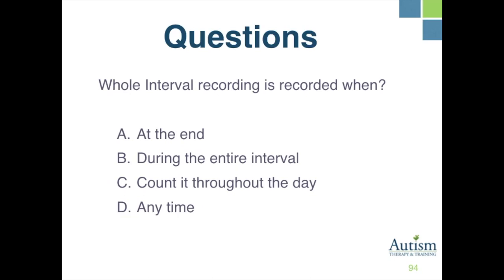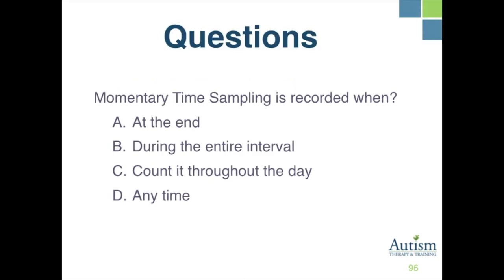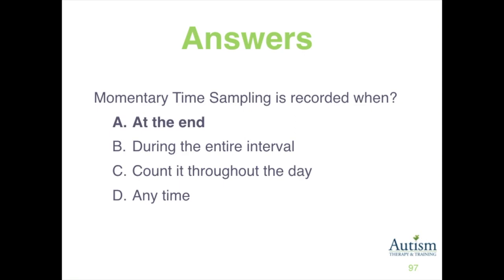Whole interval recording is recorded when A, at the end; B, during the entire interval; C, counted throughout the day; or D, any time? The correct response is B, during the entire interval. Momentary time sampling is recorded when A, at the end; B, during the entire interval; C, counted throughout the day; or D, any time? The correct response is A, at the end.